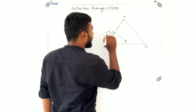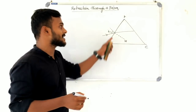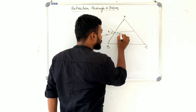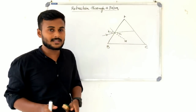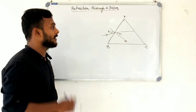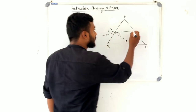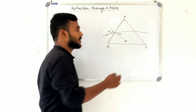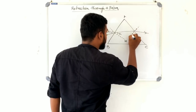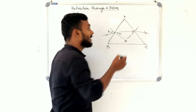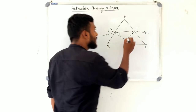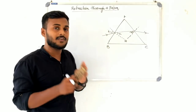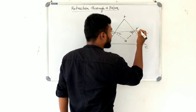When the ray hits face AB and refracts, it travels inside the prism and hits face AC. At face AC, R2 is the angle of incidence, and I2 is the angle of emergence. So in summary: at face AB, I1 is the angle of incidence and R1 is the angle of refraction; at face AC, R2 is the angle of incidence and I2 is the angle of emergence.